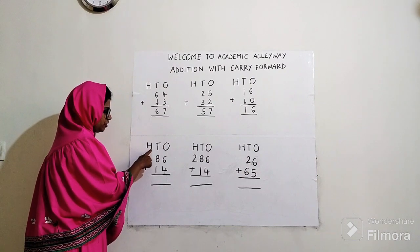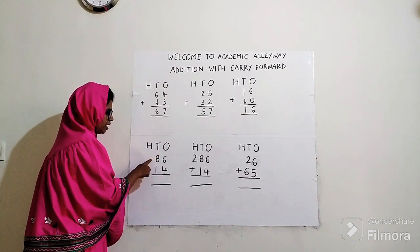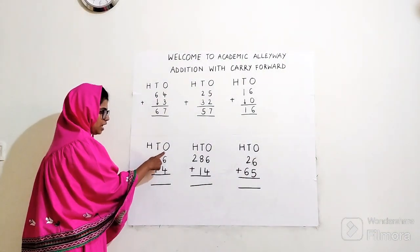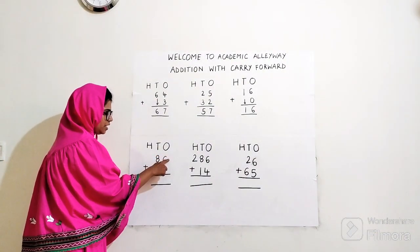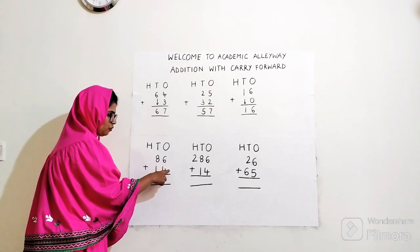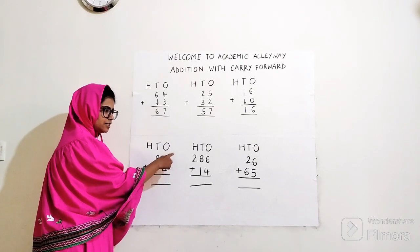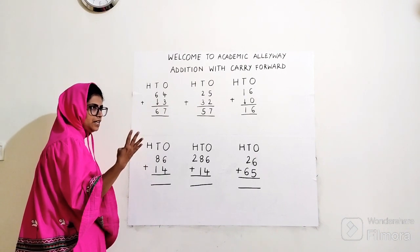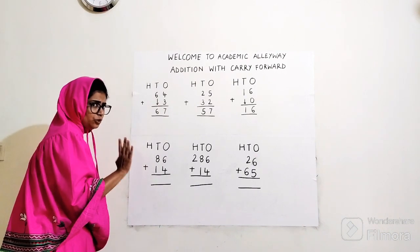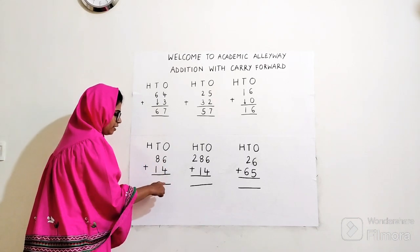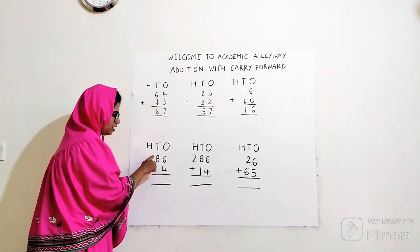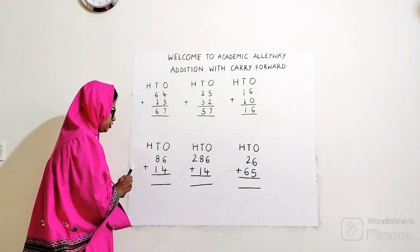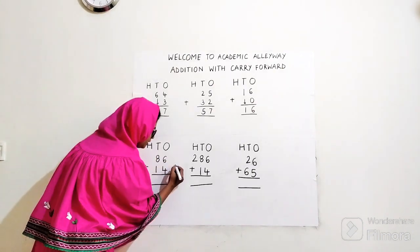Next example. H, T, O. 86 plus 14. Starting with ones: six plus four. Count after six an additional four numbers: seven, eight, nine, ten. I'm getting a two-digit answer. I can't write two digits when I have additional numbers in my tens place — here is where carry forward comes into picture.